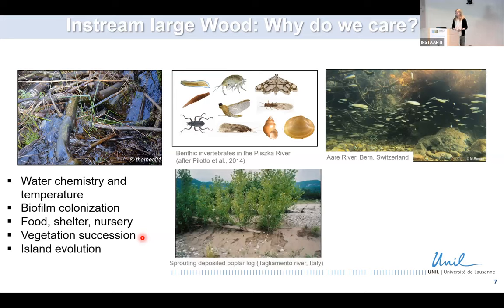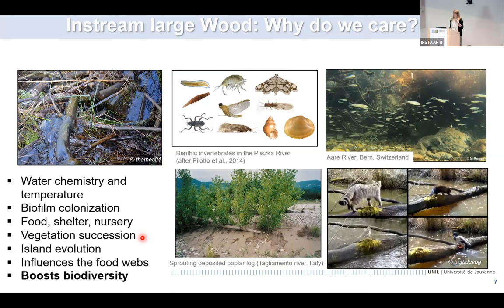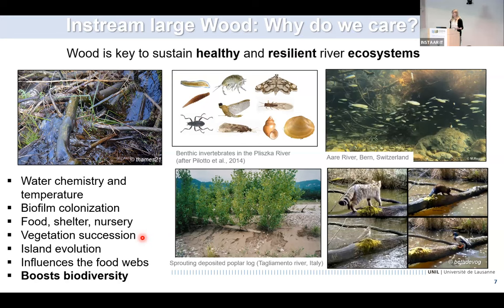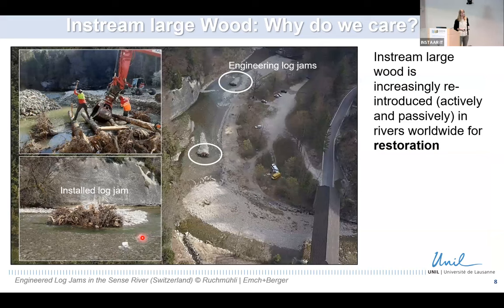Wood influences the establishment of vegetation and the development of islands in rivers. The combination of interactions between the flow, sediment, and wood provides better conditions for many species — not only aquatic species — so wood is influencing the entire food web. This is why wood is a key element sustaining river health and providing resilience to river ecosystems. After centuries of removing wood from rivers, we are seeing an increase in the reintroduction of wood to rivers worldwide.